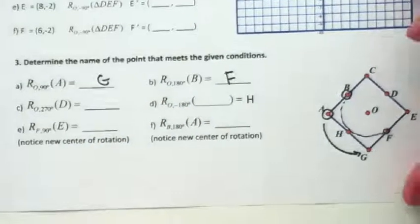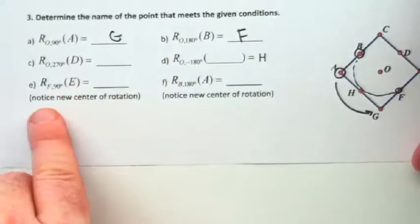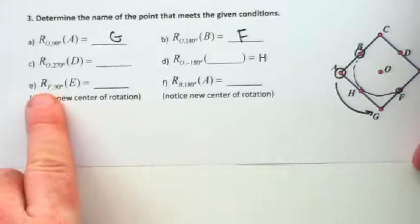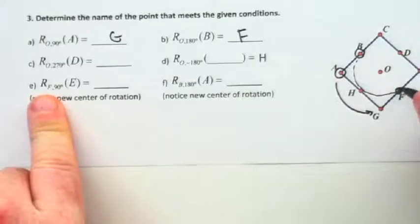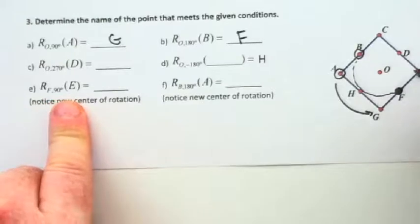Let me do one that is kind of tricky. And you've got to keep your eyes on what it says here. It does give you a little warning. It says rotate about F. So F is now the center rotation.